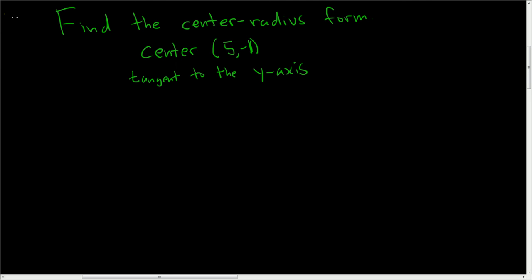All right, we're being asked to find the center radius form of a circle. We're given the center, and we're told that the circle is tangent to the y-axis. Tangent means just touches in Latin, so solution.